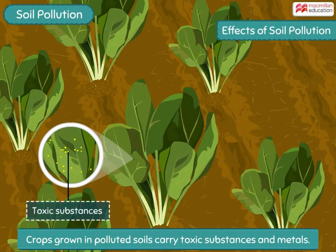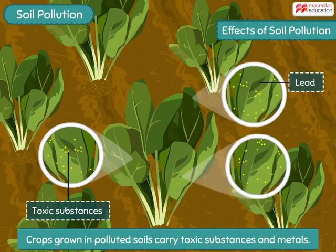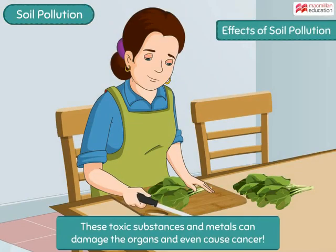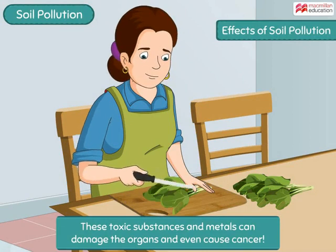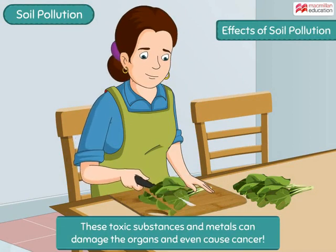The effects of soil pollution are very serious. Crops grown in polluted soils carry toxic substances and metals like lead and arsenic, which gradually find their way into the human body. Such substances can damage the organs and even cause cancer.